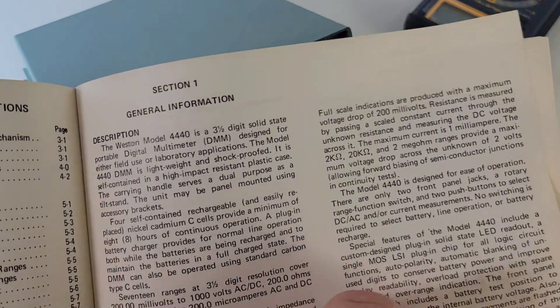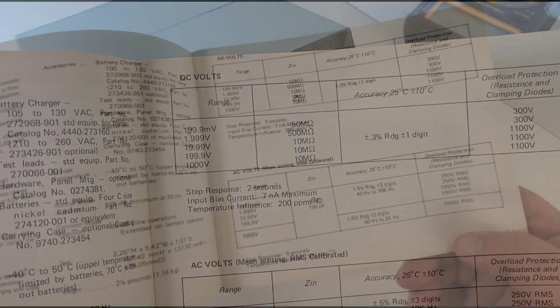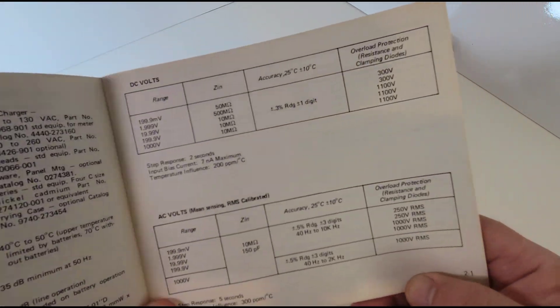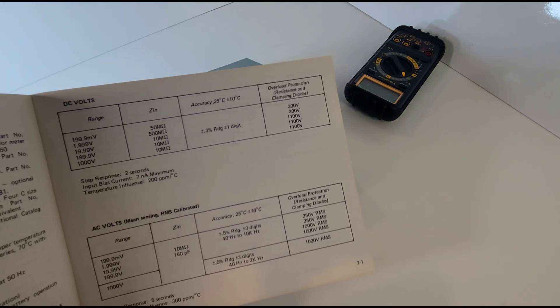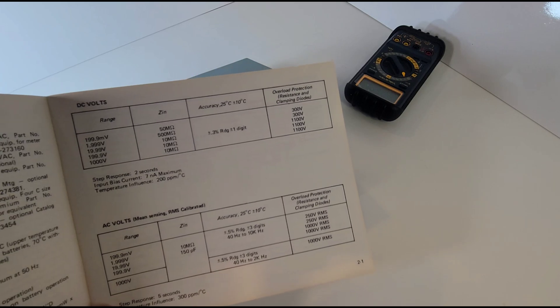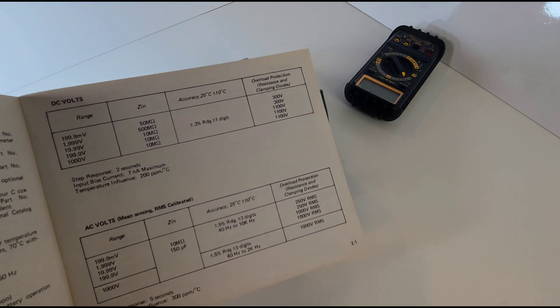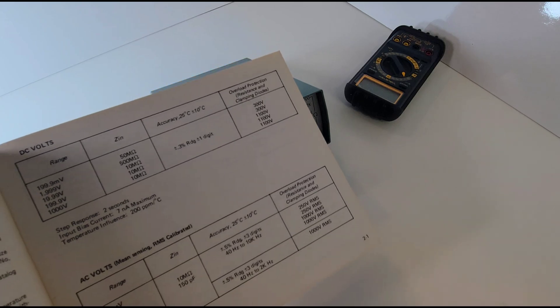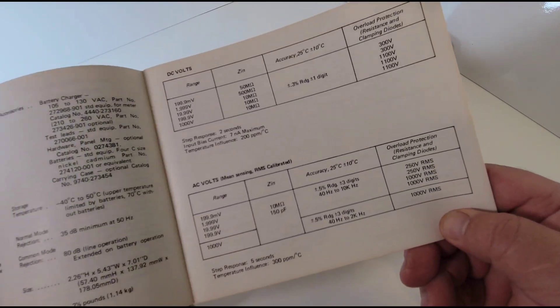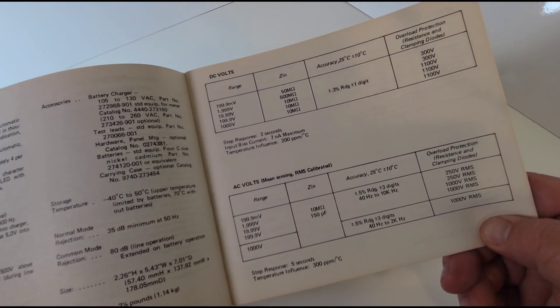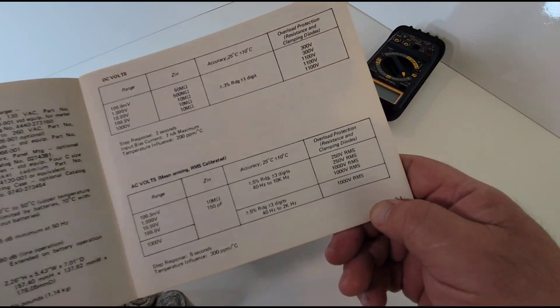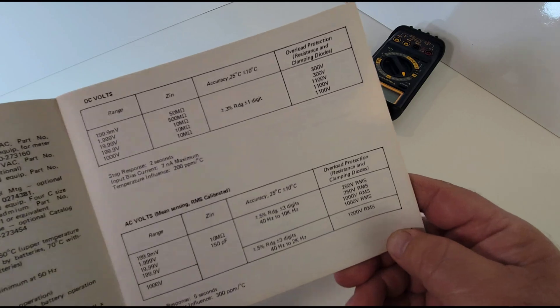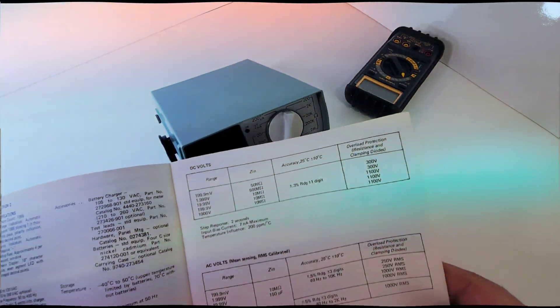The manual goes into a lot of detail, an incredible amount of detail. And they're giving you all of the specs. Here we are in the voltage range. Look at plus minus 0.3% plus one digit. So if you have a 12 volt reading, really, you're either going to get 12.03 volts or 11.97. That's it. I mean, that's fairly accurate for a meter that's half a century old.